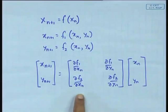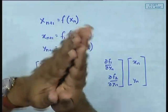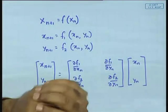A student asks: in obtaining the Jacobian we are differentiating a discrete function with respect to a discrete variable — how is that possible? To deal with this question, let us consider one dimension, where the equivalent of the Jacobian matrix is simply the derivative. Whether or not we can take the derivative is what we need to understand.